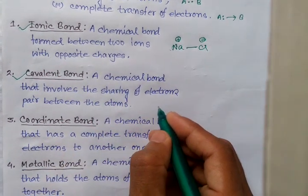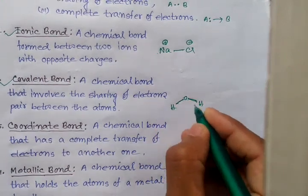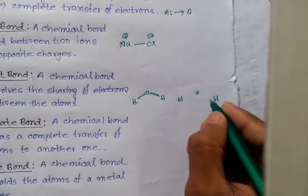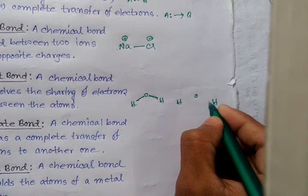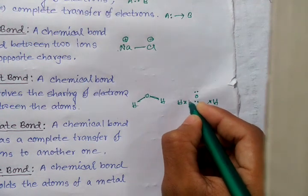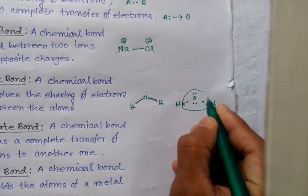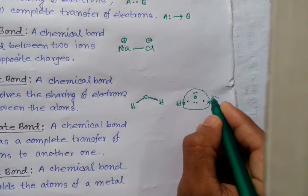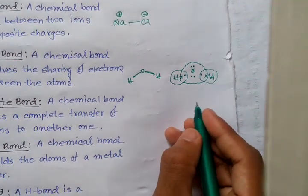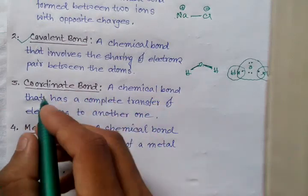For example, the water molecule — this bond is a covalent bond because here the oxygen electron and the hydrogen electrons are shared between the atoms. The oxygen shares its electrons with both hydrogen atoms, forming covalent bonds. Another type of bond is the coordinate bond.